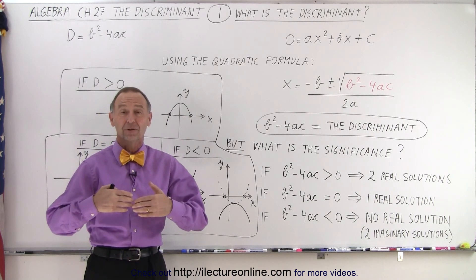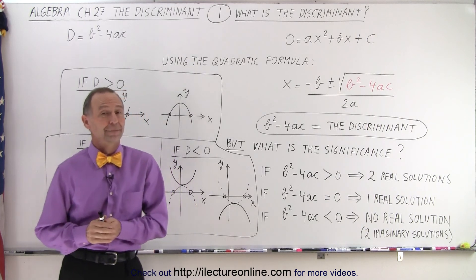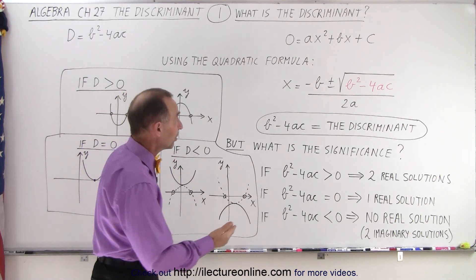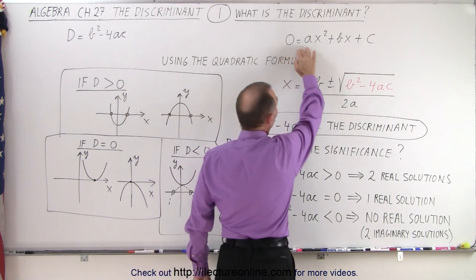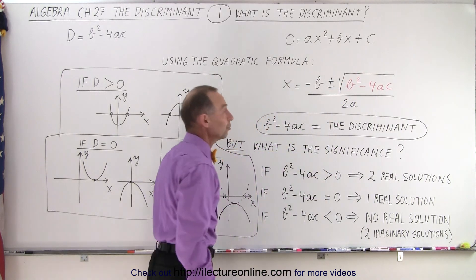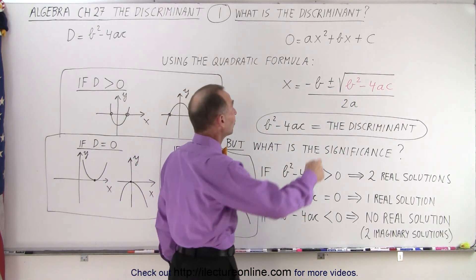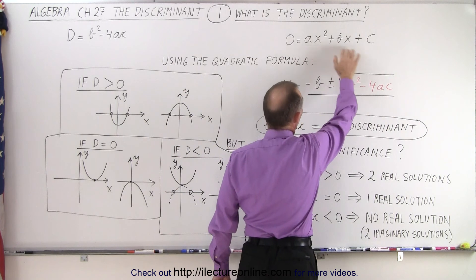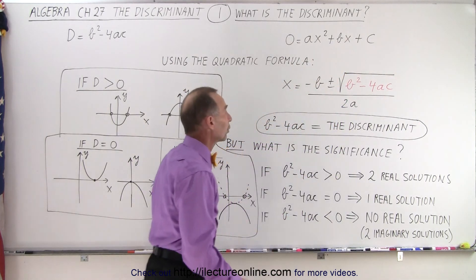So why do we talk about the discriminant and what's so special about it? Well if we take a look and see what the general equation looks like of a quadratic equation, we notice that we have these three constants a, b, and c. They're called the coefficients of that quadratic equation.